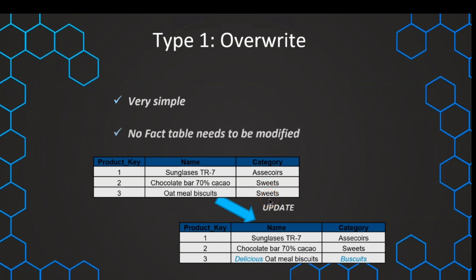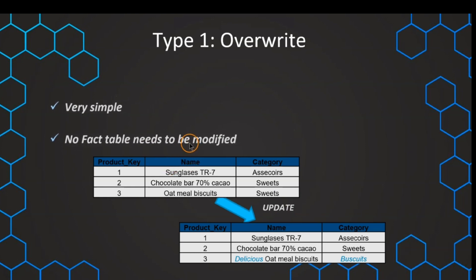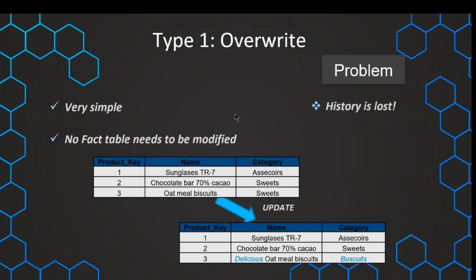You can see that this is very simple to implement because we just update the values in the dimension tables and nothing else is necessary apart from these very simple updates. The fact tables don't need to have any additional updates. But sometimes there can be some problems associated with that. The main issue is that we don't have any history of the changes. Once we make this change — for example, if we change the category to biscuits — we can now only see how the data is grouped with this new updated category description.